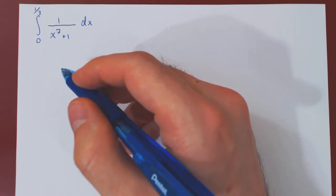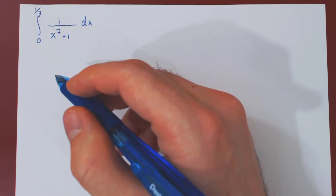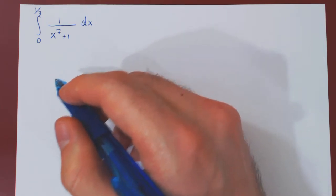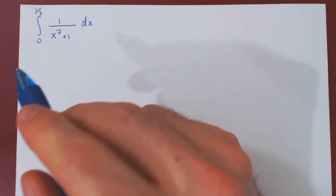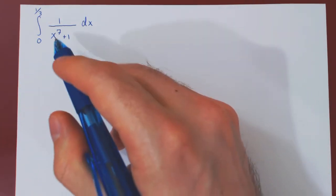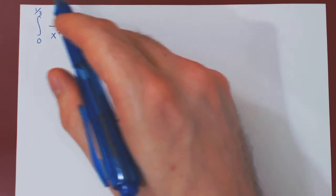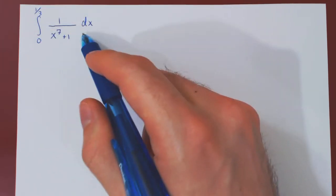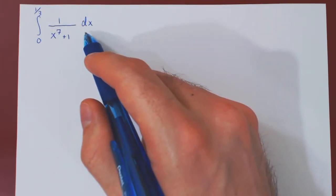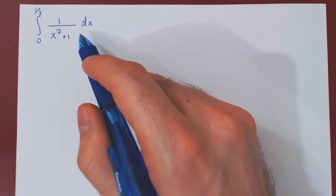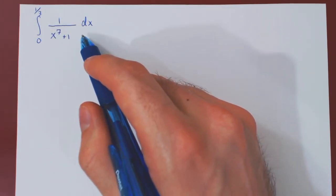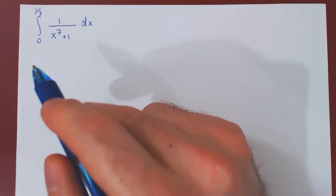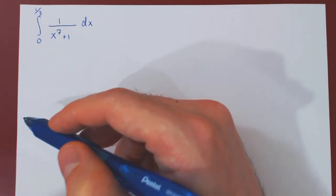In this video we will use our knowledge of power series term-by-term integration to provide an estimate for the given definite integral. We will also provide an upper bound for the error of our approximation.